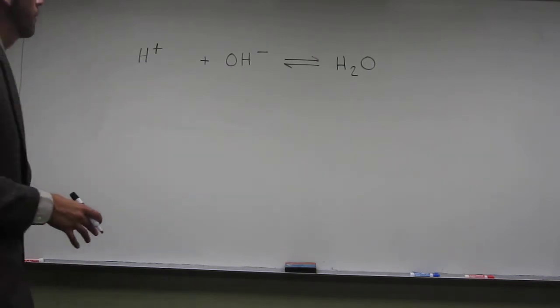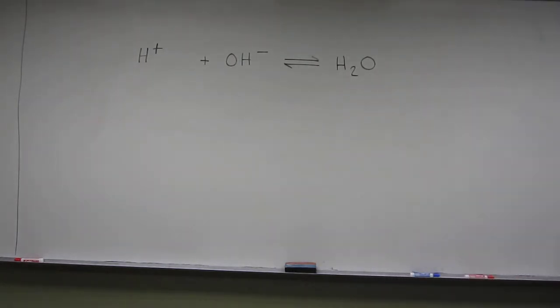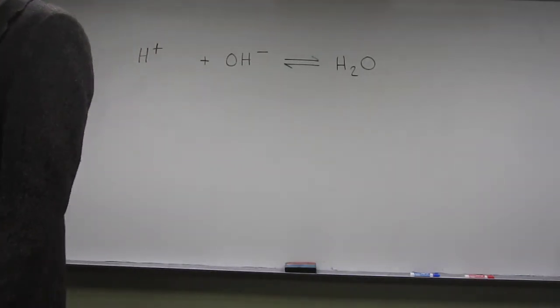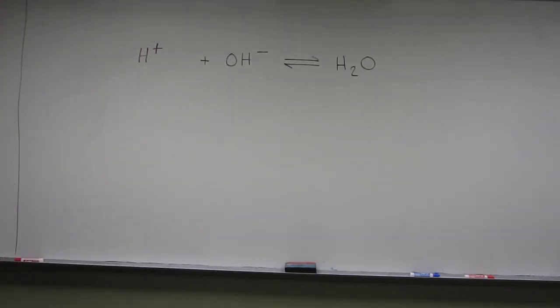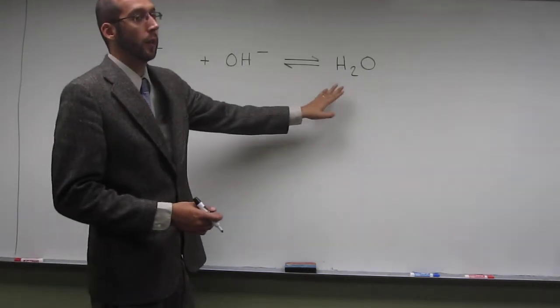So remember Lewis acids are often different than Bronsted-Lowry acids. Lewis acids will have an empty orbital where lone pair electrons are being donated into. So if we think about these two particles making this particle here.